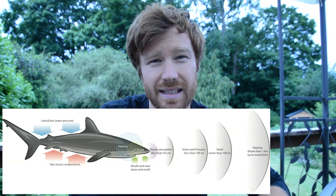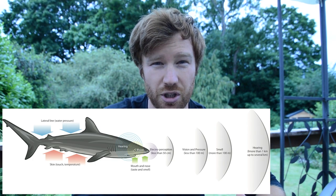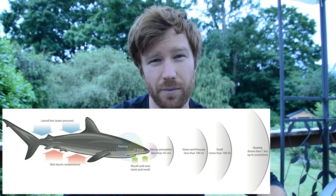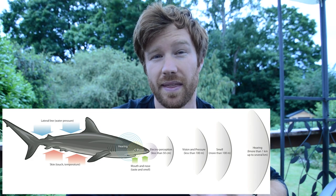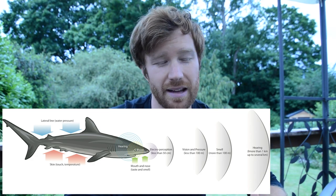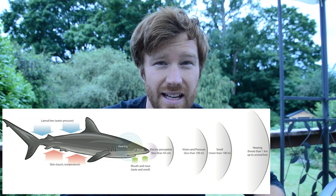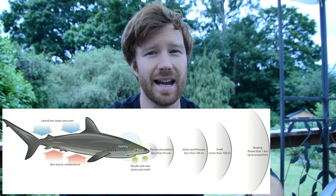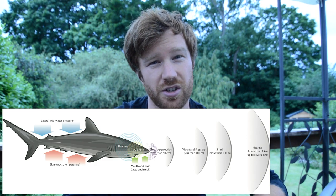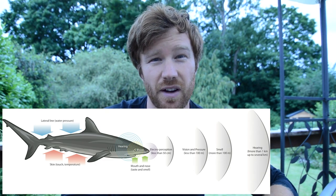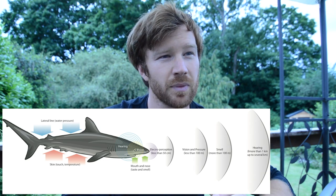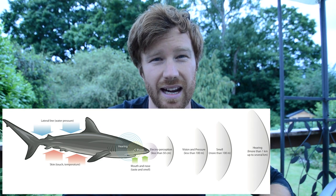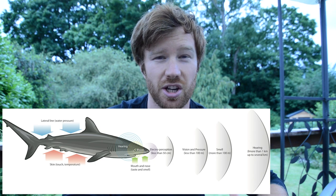Now the two really interesting, unique sensors they have. The first is electroreception — they can detect electrical currents, which is just incredible. All living animals give off electrical signals through their heartbeat and muscle contractions, and sharks can detect these electrical impulses over a short distance, usually about half a meter, maximum a meter. This allows them to hunt in the sand and identify fish that might be buried under it, and also to hunt in very low or no light conditions because they can sense that electrical activity without even seeing the animal.